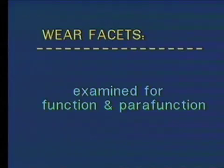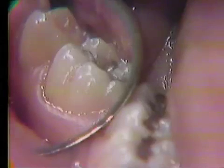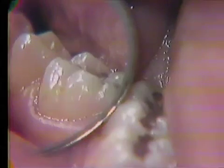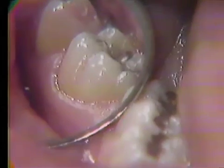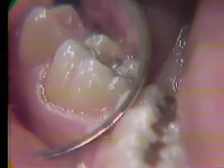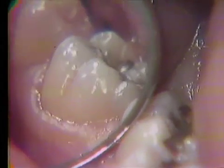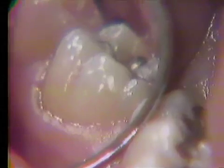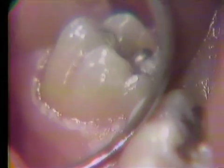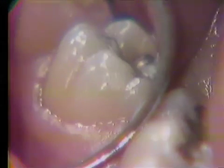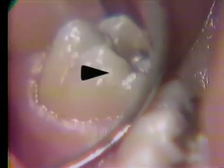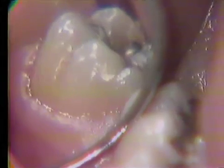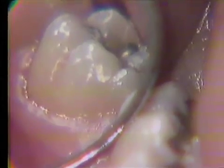Four wear facets will be demonstrated. The first wear facet is on the mandibular right first molar. Since wear facets are smooth and flat, they do not mark well with articulating paper. Light reflects from wear facets and will be used for demonstrating the areas of interest. The wear facet on the distal buccal incline of the distal buccal cusp contacts the opposing tooth in central occlusion and during the first part of the right working movement.